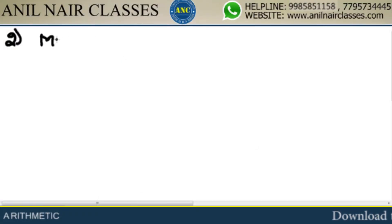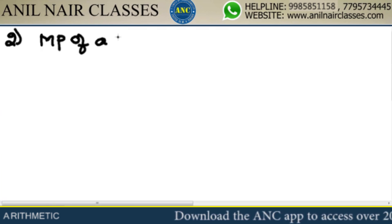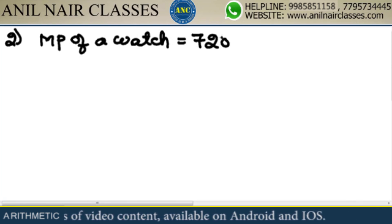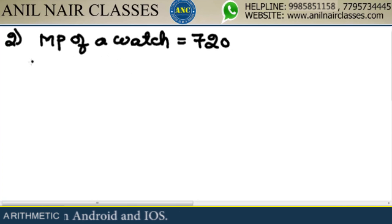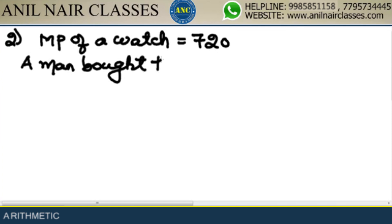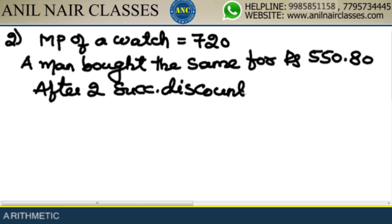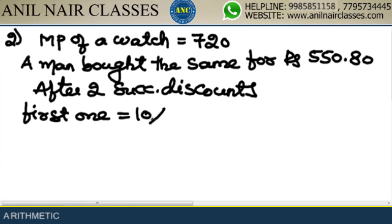The market price of a watch was ₹720. A man bought the same watch for ₹550.80 after getting two successive discounts. The first discount is 10%. The second discount is how much? This is an original Staff Selection Commission question.